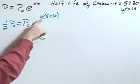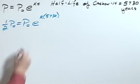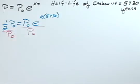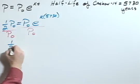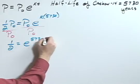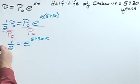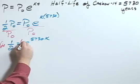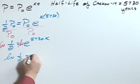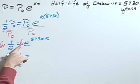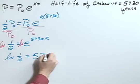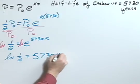Now I can solve for my K. I'll start by dividing both sides by P sub zero. So I'll have one half equals E to the 5,730 K. Next, take the natural log of both sides. So the natural log of one half will equal, remember that the natural log of E to some power is simply that power, 5,730 K.